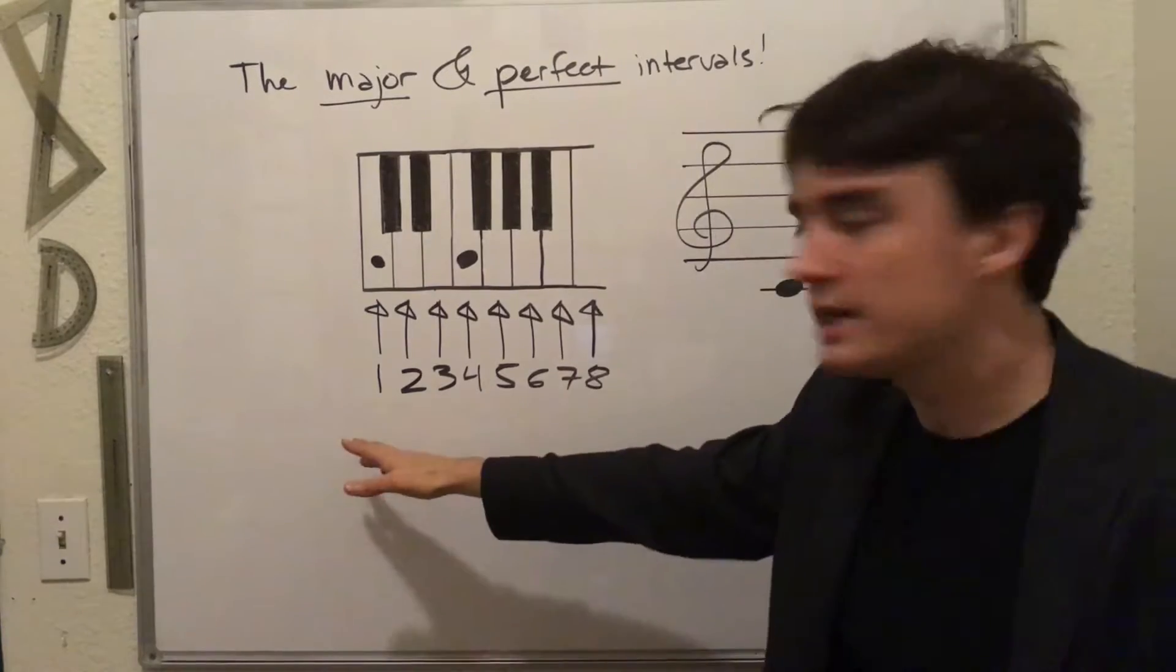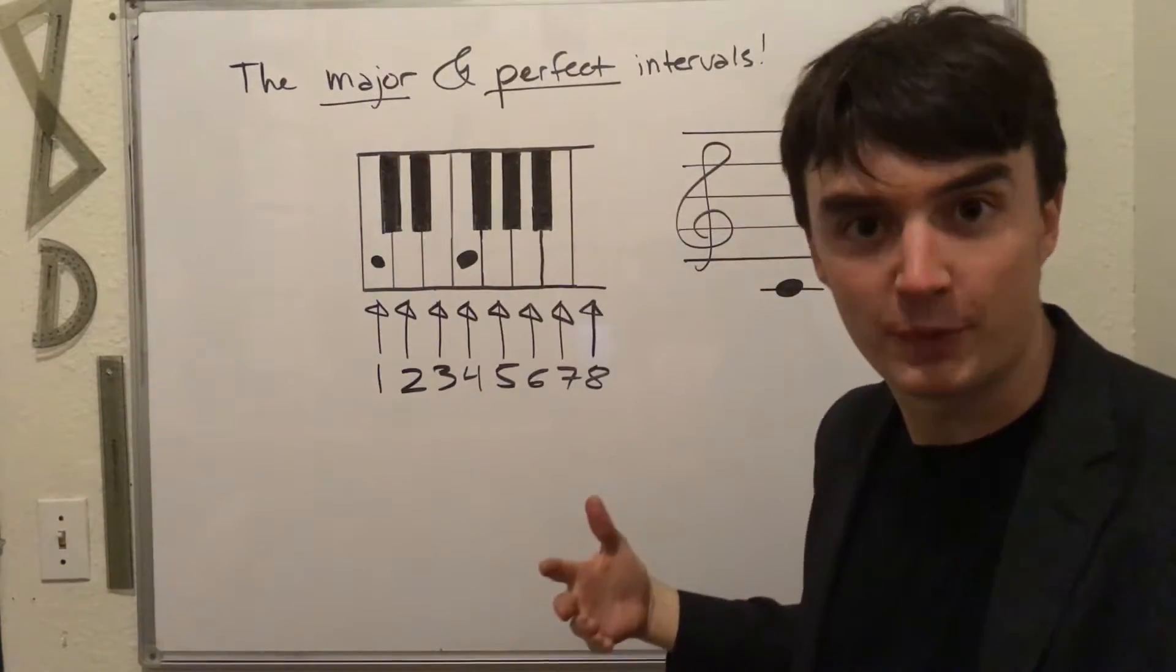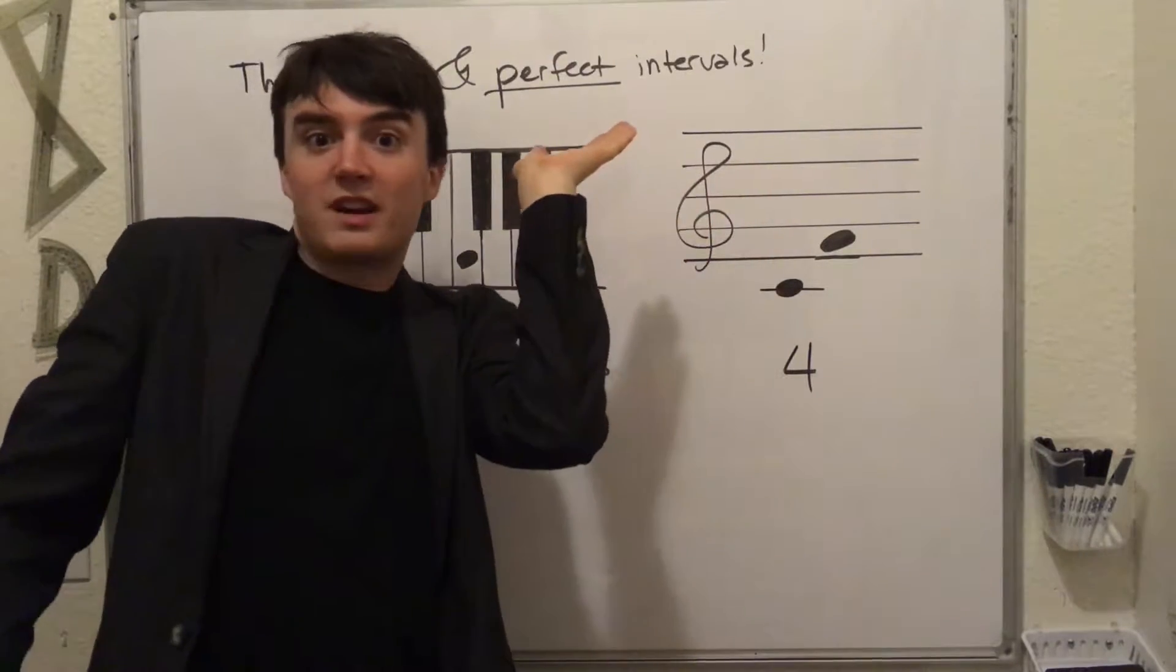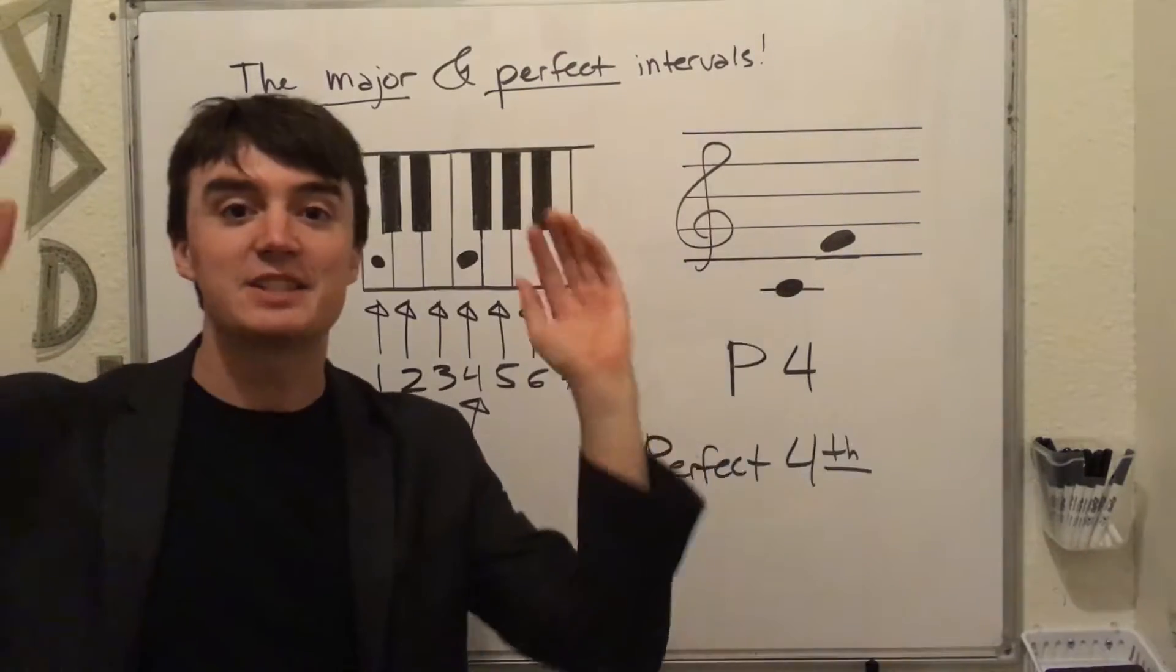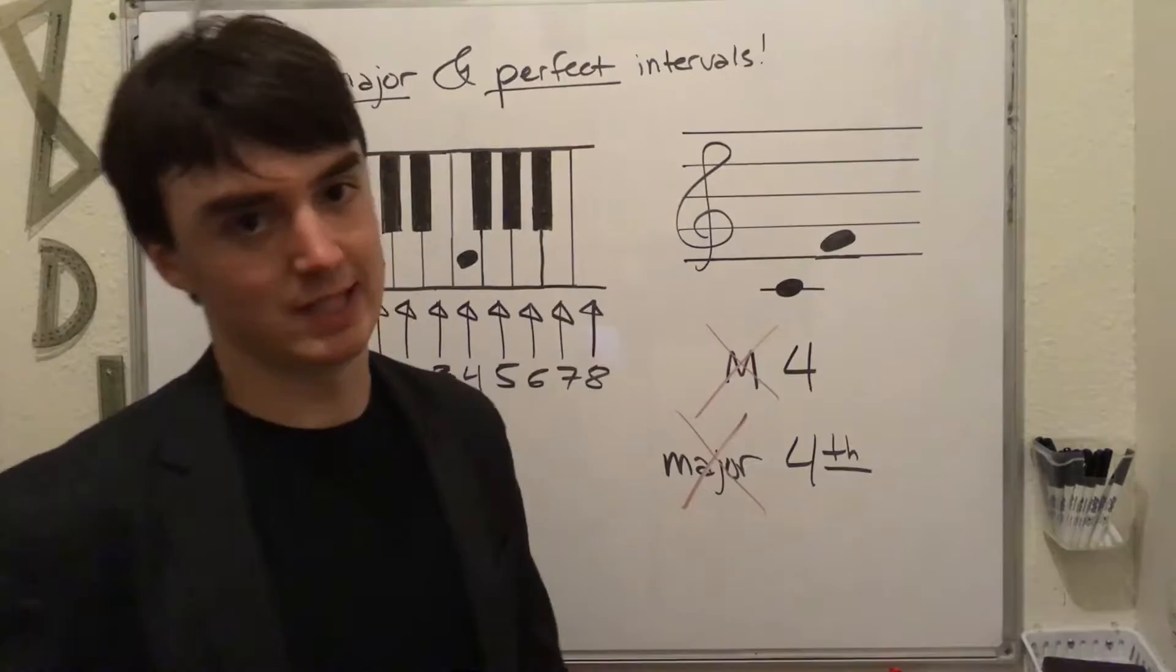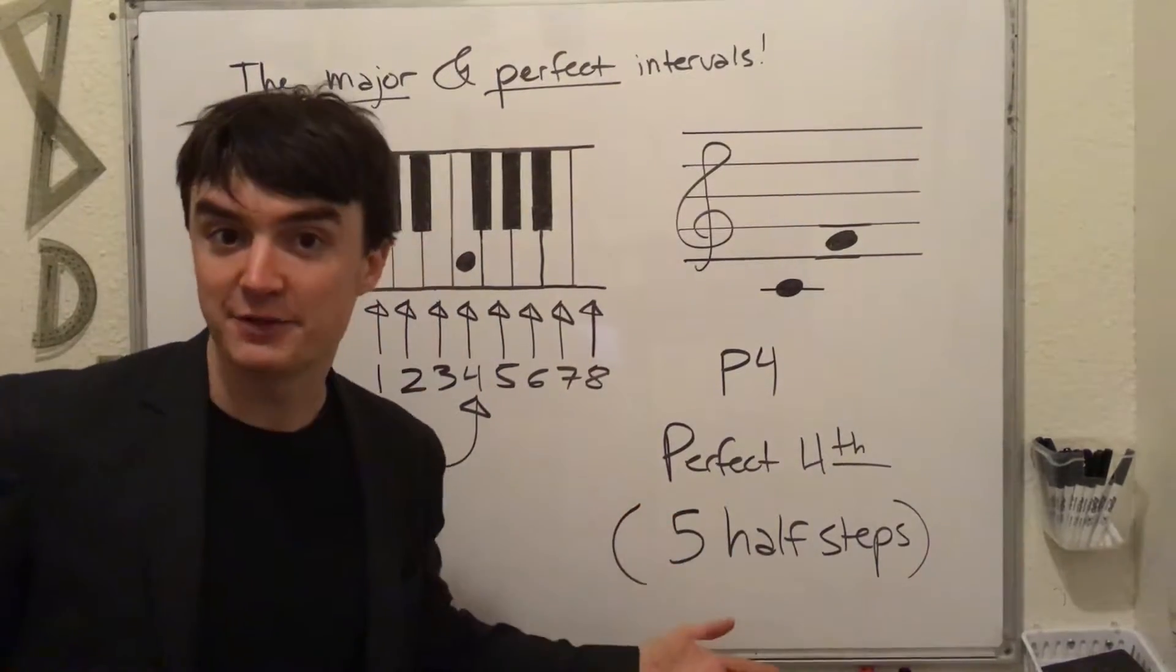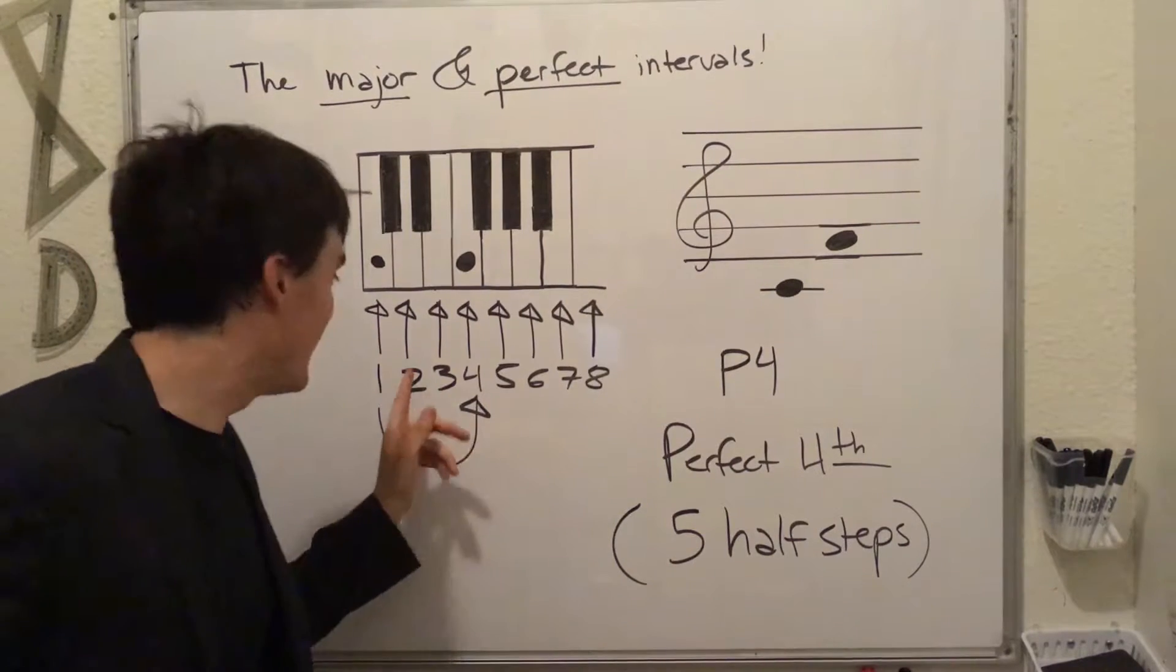So let's say we start on 1 and we go to 4. A fourth, right? But this is not a major interval. You could maybe guess what kind of interval it might be. It's a perfect fourth. There's no such thing as a major or minor fourth. A perfect fourth is five half steps. Whole, whole, plus a half.